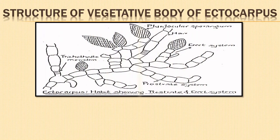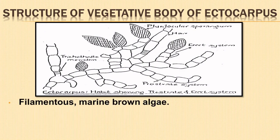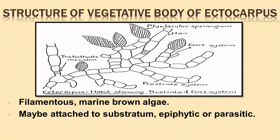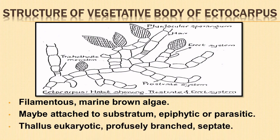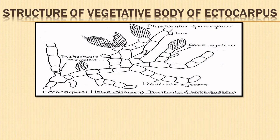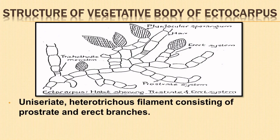Let us begin with the structure of the vegetative body of Ectocarpus. Ectocarpus is a genus of small filamentous marine brown alga within the order Ectocarpales. They may remain attached to the substratum with the help of basal rhizoids. Some are epiphytic and few are parasitic. The thallus of Ectocarpus are eukaryotic, profusely branched and septate with uniseriate heterotrichous filaments consisting of prostrate and erect branches.